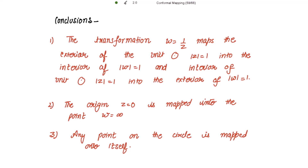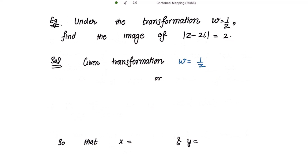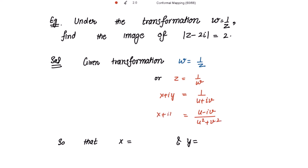Example: Under the transformation w = 1/z, find the image of |z - 2i| = 2. Given w = 1/z, we write z = 1/w. Substituting z = x + iy and w = u + iv and rationalizing gives z = (u - iv)/(u² + v²). Comparing real and imaginary parts: x = u/(u² + v²) and y = -v/(u² + v²).